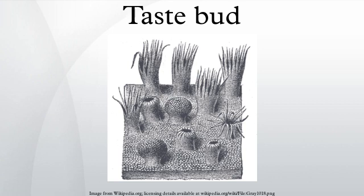Circumvalate papillae: there are only about 10 to 14 of these papillae on most people, and they are present at the back of the oral part of the tongue. They are arranged in a circular-shaped row just in front of the sulcus terminalis of the tongue. They are associated with ducts of von Ebner's glands and are innervated by the glossopharyngeal nerve. Taste buds are only present in circumvalate, fungiform papillae, and the soft palate.